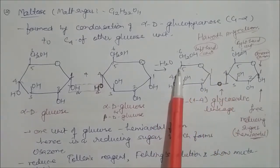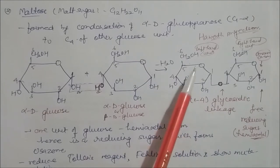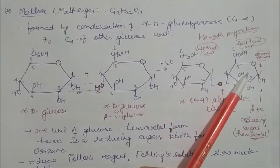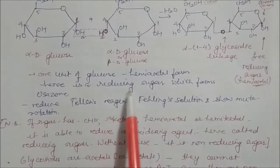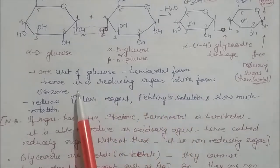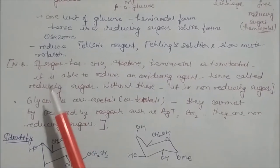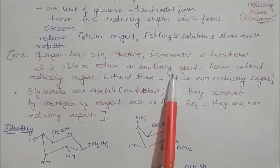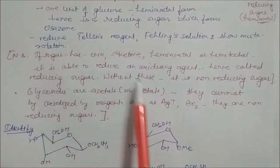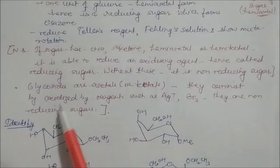In maltose, one unit is acetal and the other is hemiacetal, making it a reducing sugar. It can form osazones, reduce Tollens' reagent and Fehling's solution, and show mutarotation. A sugar with a free CHO or ketone (hemiacetal or hemiketal) can reduce an oxidizing agent — it is a reducing sugar. Without this, it is non-reducing. Glycosides (acetals or ketals) are non-reducing sugars and cannot be oxidized by Ag⁺ or Br₂.